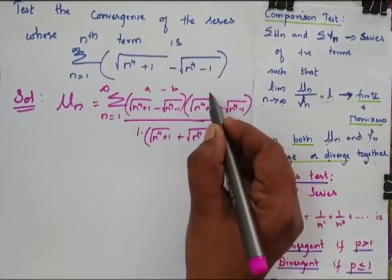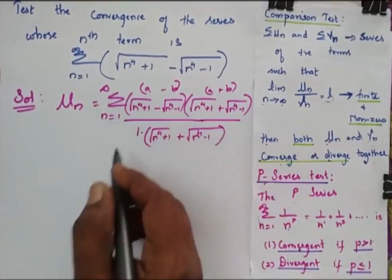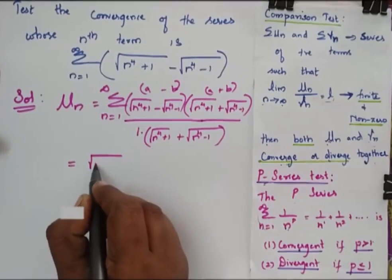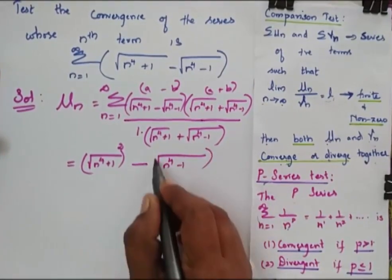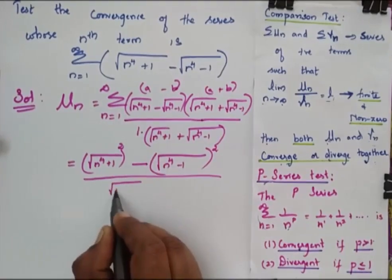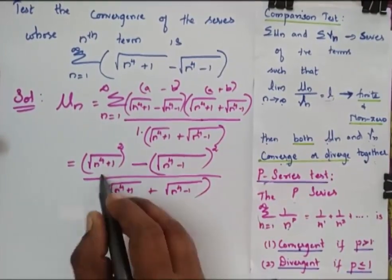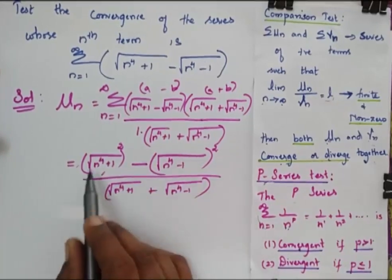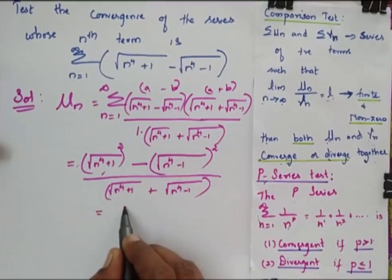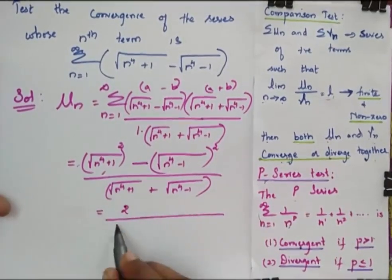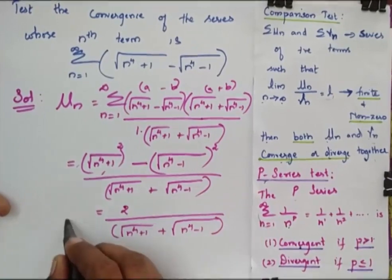This is of the form (a minus b)(a plus b), which equals a squared minus b squared. So when I simplify, I get square root of n power 4 plus 1 whole squared minus square root of n power 4 minus 1 whole squared, divided by square root of n power 4 plus 1 plus square root of n power 4 minus 1. Taking the squares removes the square roots, n power 4 cancels, and I get 1 minus of minus 1 which is 2. So un equals 2 divided by square root of n power 4 plus 1 plus square root of n power 4 minus 1.